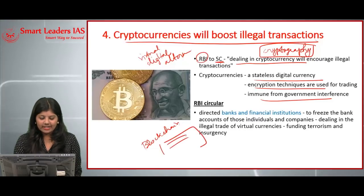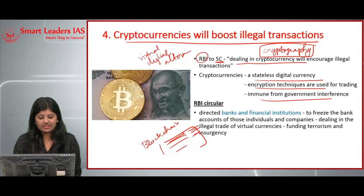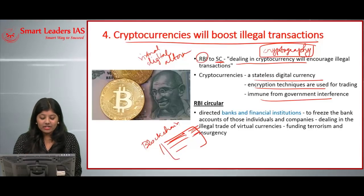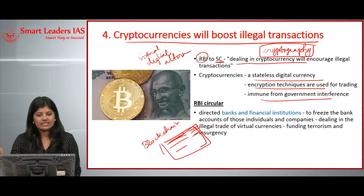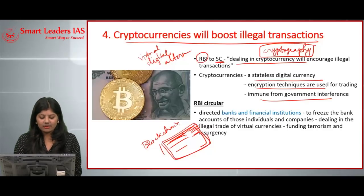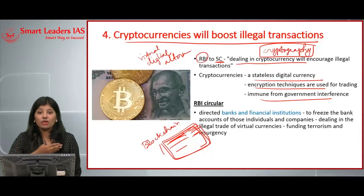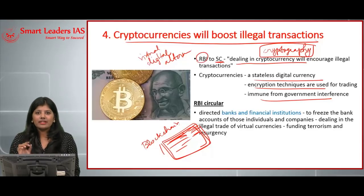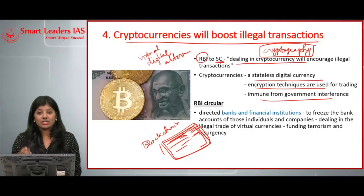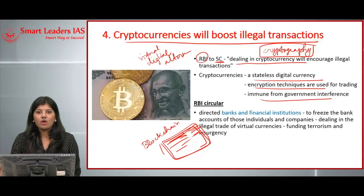The blockchain is a public ledger containing all financial transaction information. Once any data is updated into this ledger, it cannot be deleted. In early 2018, the RBI actually banned the use, sale, and purchase of cryptocurrencies in India, announcing that there is no legal tender for cryptocurrencies — meaning they are not recognized as a valid medium of exchange for financial transactions.